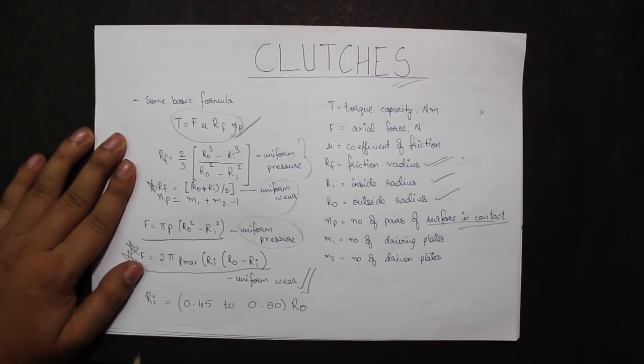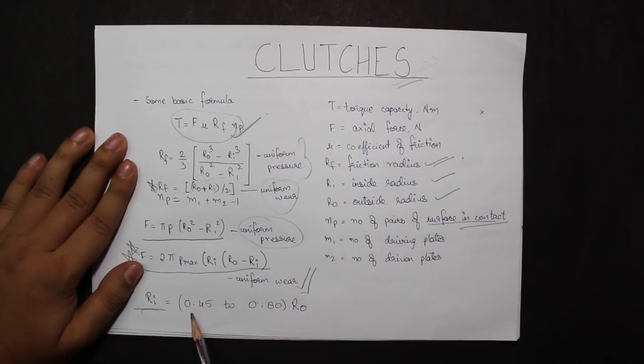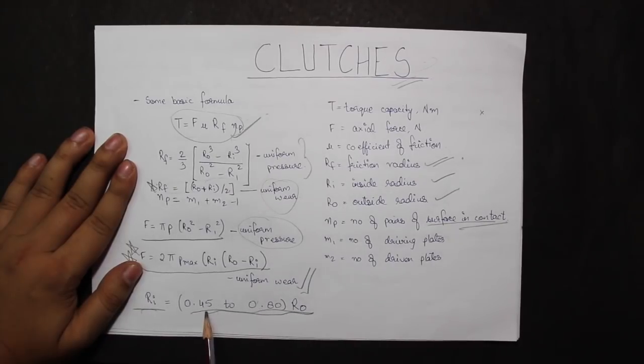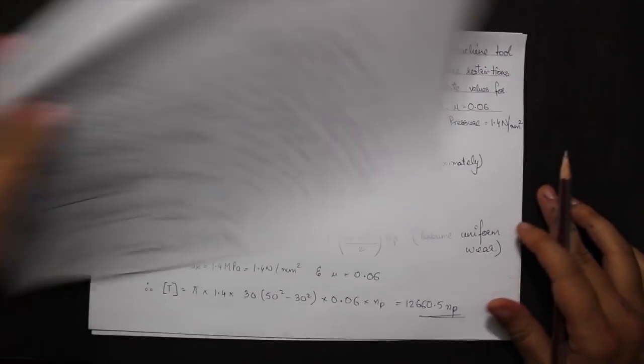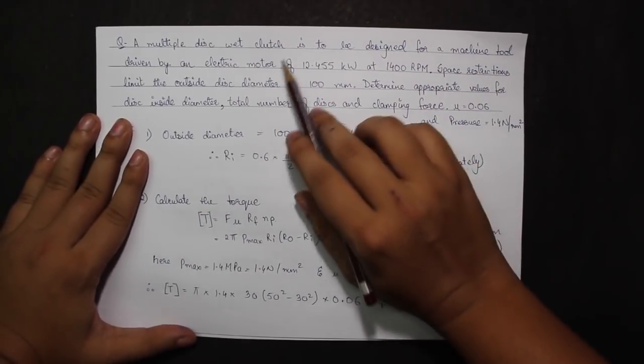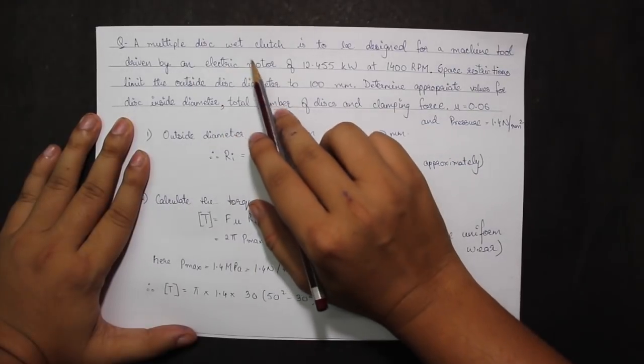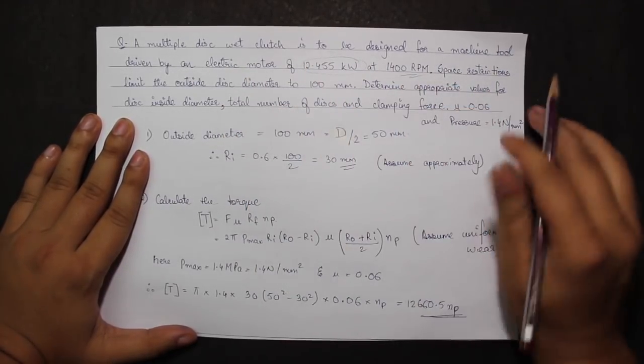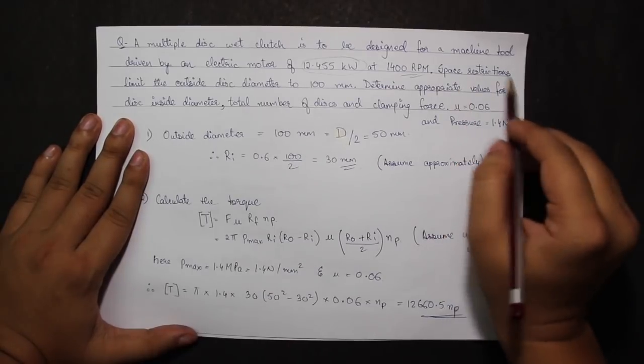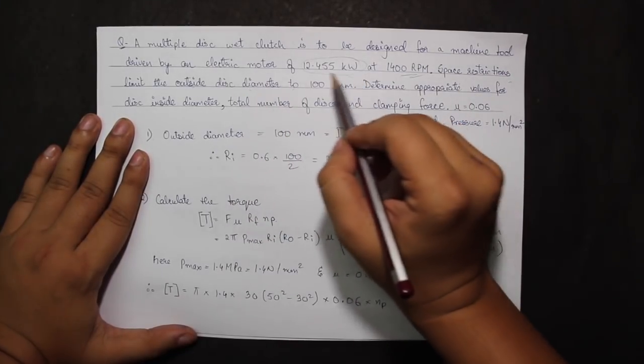RI, or the inner radius, is approximately equal to 0.45 to 0.80 times R0. Coming to the question, we have a multiple disc wet clutch to be designed for a machine tool driven by an electric motor of 12.455 kilowatts at 1400 rpm.